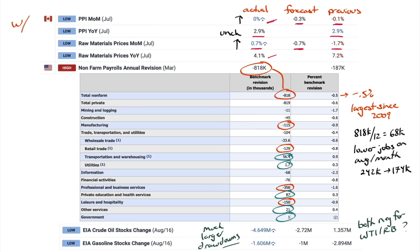The big news in economic data last week was of course Powell's speech on Friday, but in the data it was the non-farm payroll revisions. I was on the website clicking refresh and it just wasn't coming up — apparently they were late releasing it and were emailing it. Negative 818,000 jobs — it's only 0.5%, which seems small but it's quite large, the largest revision since 2009. Manufacturing down 115,000; retail trade down 129,000; professional and business services down 358,000; leisure and hospitality down 150,000.